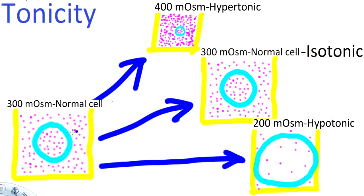Next, we're going to place the cell into an isotonic solution. Just think of isotonic with the 'S' for same — the cell isn't going to shrink or swell. It's the same concentration.